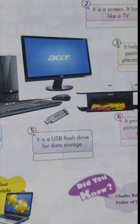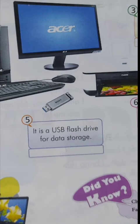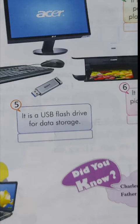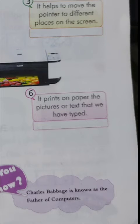Number five is a USB flash drive for data storage - that is the pen drive, also known as a flash drive. The function of a pen drive is to store a huge amount of data. It is a temporary storage device - we can erase the stored data whenever we want. It is very easy to carry and is very commonly and popularly used today.